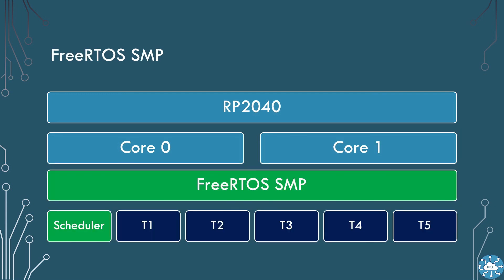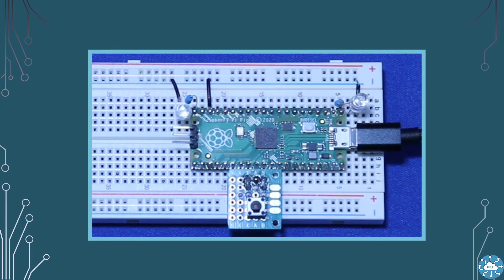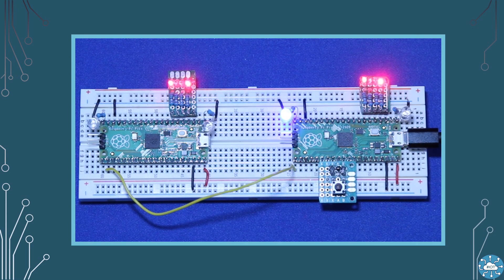We can also use both cores and give the management of this over to FreeRTOS Kernel using SMP, symmetric multiprocessing, so our tasks automatically use both cores. We build an example to show this. The examples all run on simple circuits using a few LEDs. A breadboard is required to help you put these circuits together. One example uses two Picos communicating together over serial, but we build up to this complexity a step at a time.